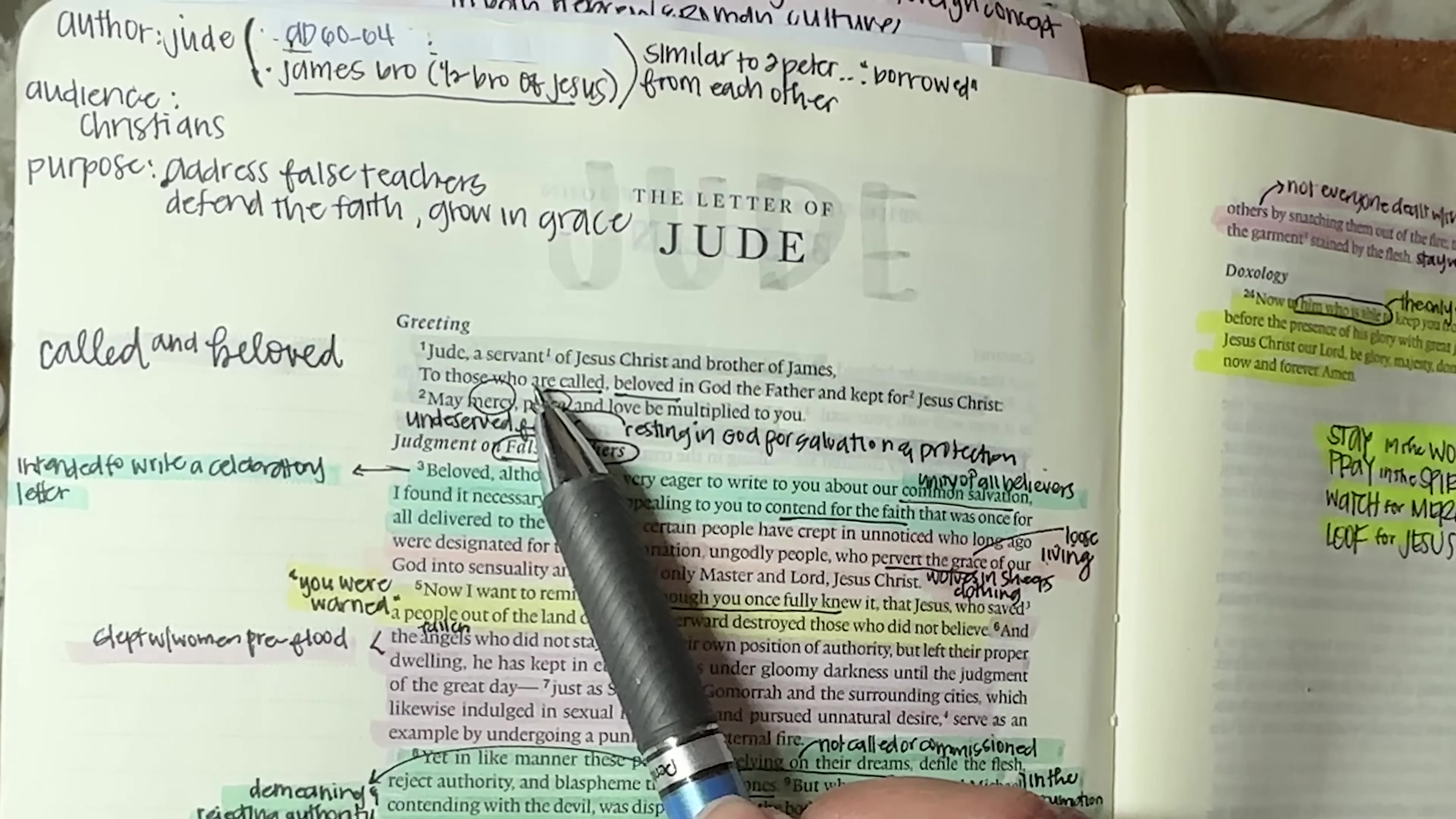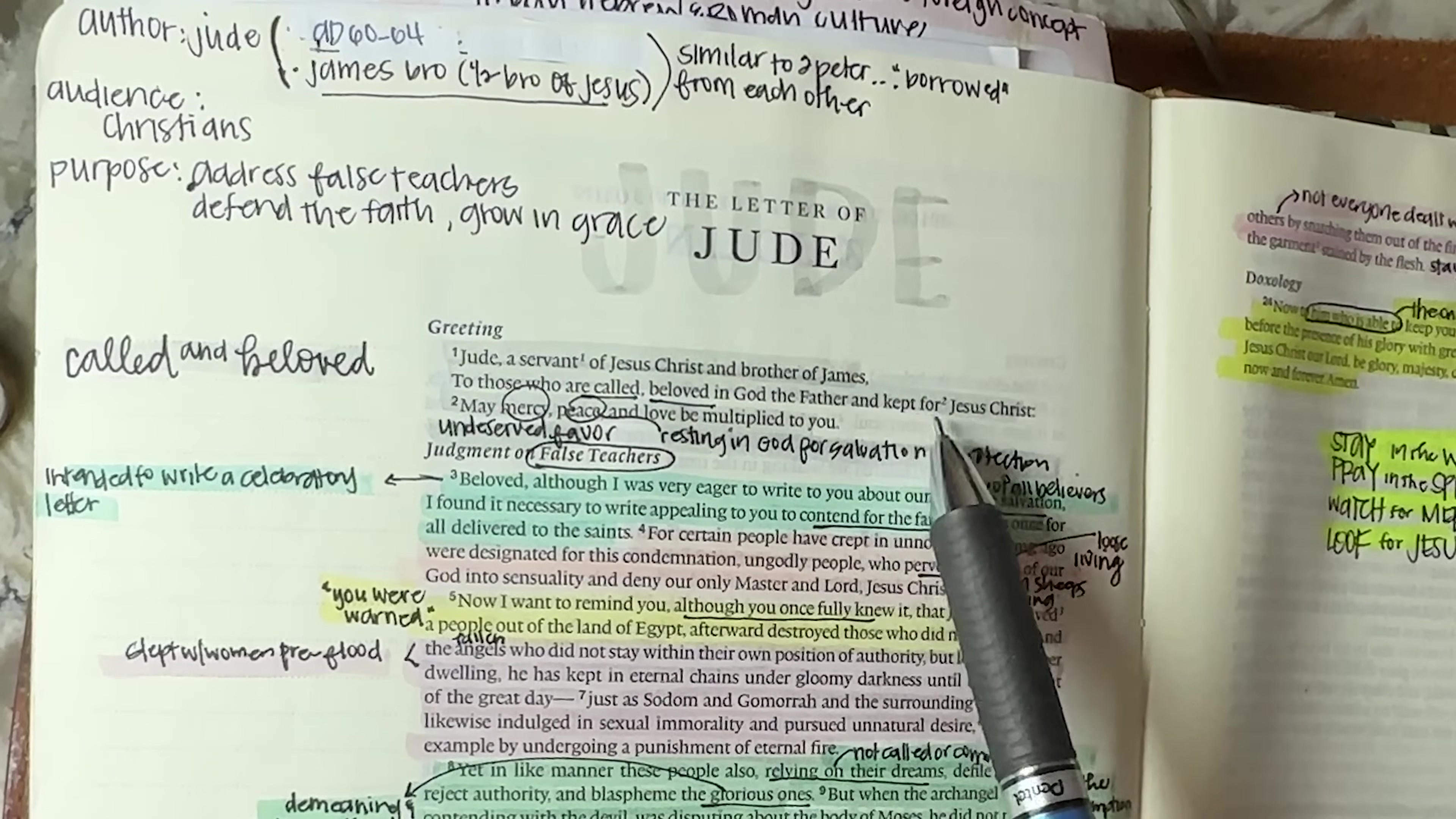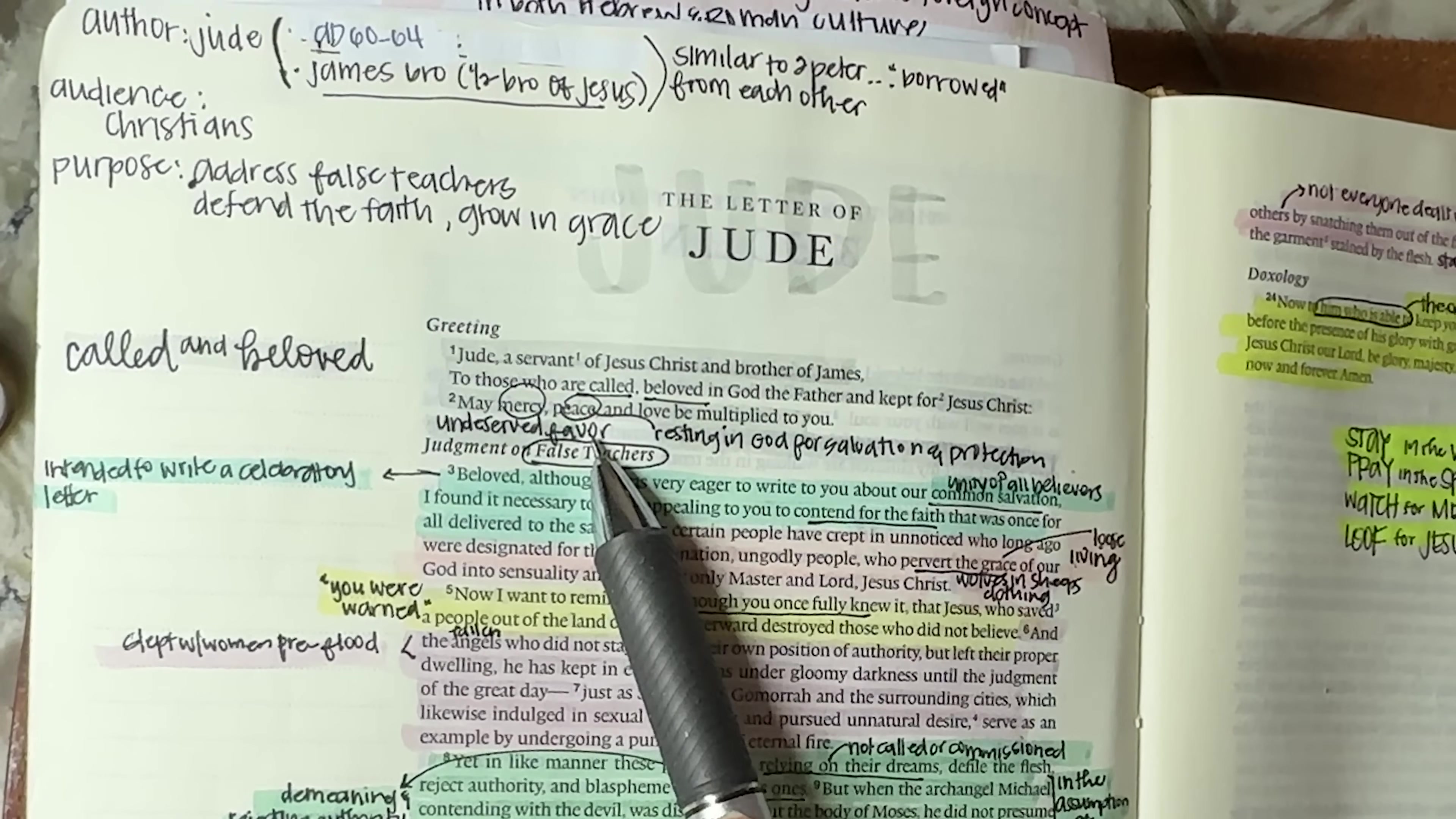So Jude, a servant of Jesus Christ and brother of James. Notice he doesn't say, I'm Jesus's brother. No, he says, I'm James's brother and I'm a servant of Jesus. To those who are called, beloved in God, the father and kept for Jesus Christ. So we are called and beloved. May mercy, peace and love be multiplied to you. I receive that, Jude. Thank you. So mercy being that undeserved favor and peace being that ability to rest in God for salvation and protection.